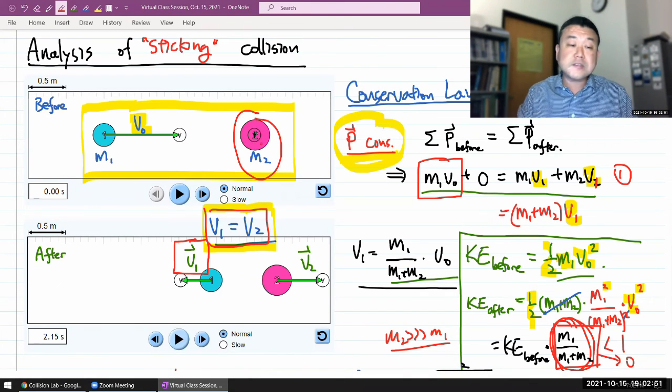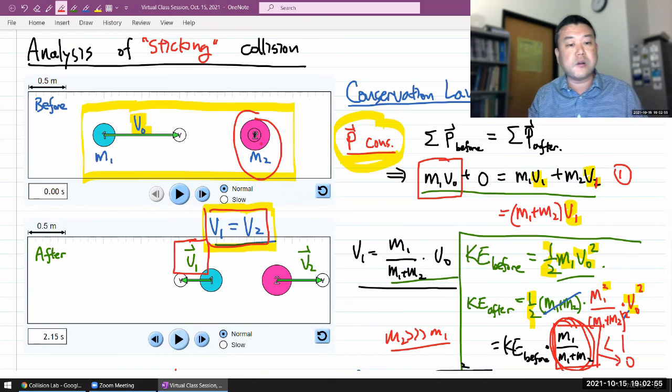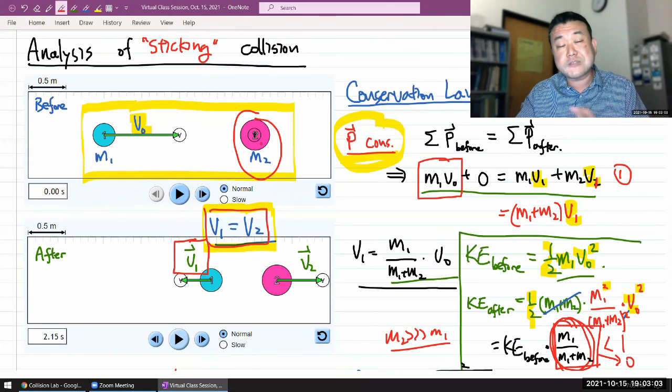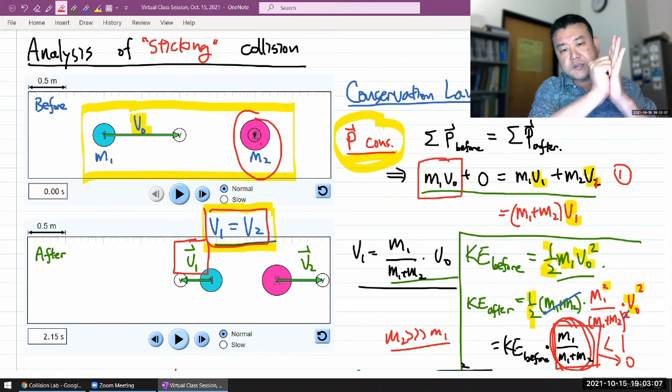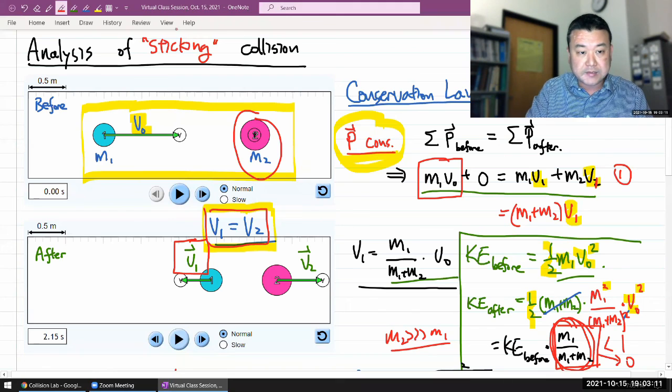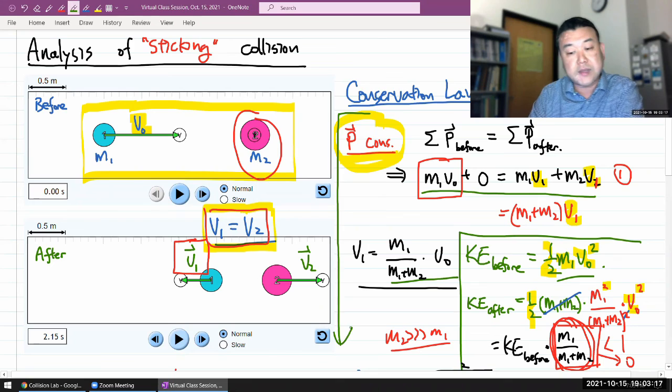So that's the completely inelastic or sticking collision. And you can see that, even without someone telling you that there is something that dissipates away energy. If you have a kind of collision where things stick together, it just, through this analysis, it must mean that energy cannot be conserved in a situation like that. You can see that. Thank you.